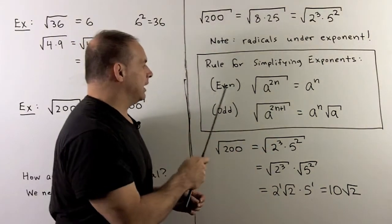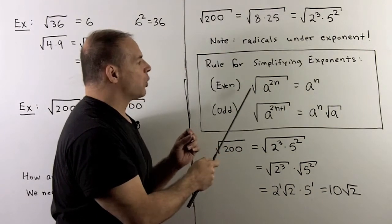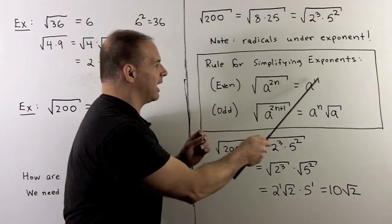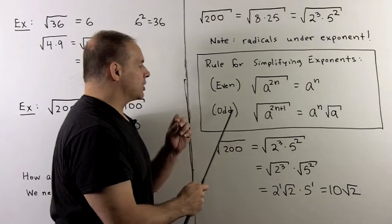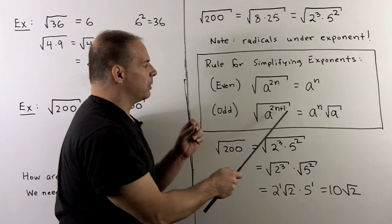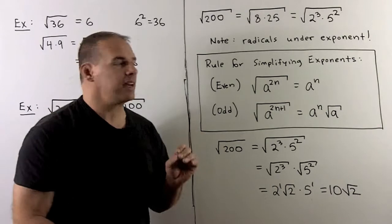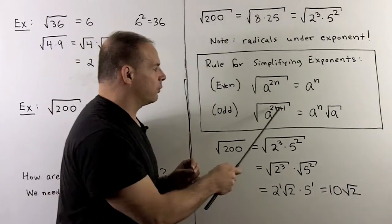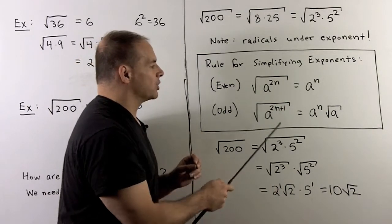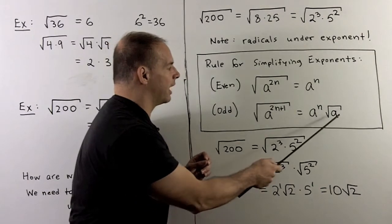If I have an even exponent, we just cut it in half: square root of a to the 2n is just a to the n. If I have an odd exponent — a to the 2n plus 1 — I push a square root of a to the side, and then take half of what's left over. So square root of a to the 2n plus 1 is a to the n times square root of a.